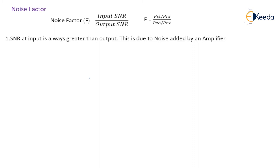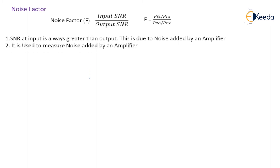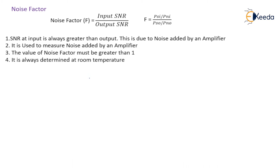The input SNR is always greater than the output SNR. This is due to the noise added by an amplifier. Noise factor is used to measure the noise added by an amplifier. The value of noise factor must be greater than 1, and it is always determined at room temperature.